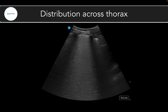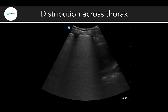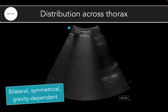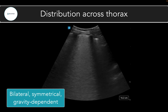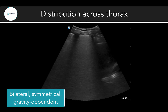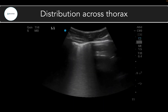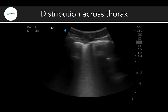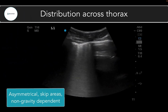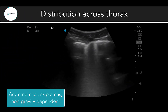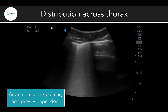The third thing to look at is the distribution of B-lines across the thorax. With cardiogenic pulmonary edema, B-lines should be bilateral, symmetrical, and follow a gravity-dependent gradient most prevalent at the lung bases. With infectious or inflammatory pathologies, B-line distribution is usually asymmetrical — there may be skipped or spared areas of A-lines — and it may be non-gravitational, for example most prevalent at the apices with relatively spared dependent zones.